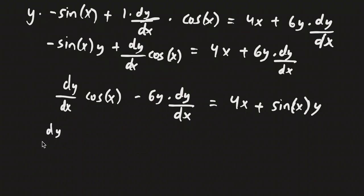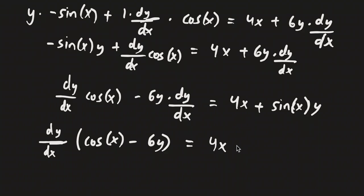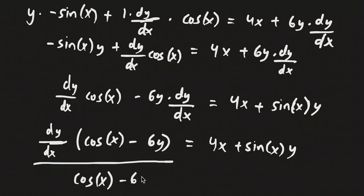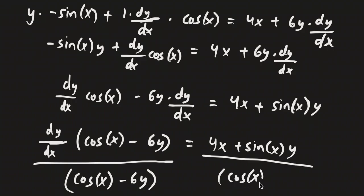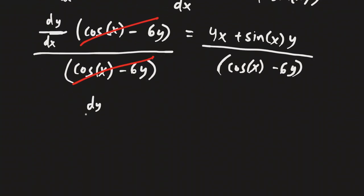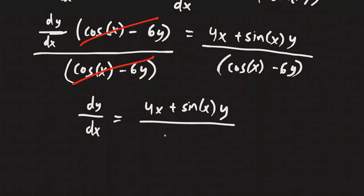Now we're going to factor out the dy/dx on the left side, making this dy/dx times cosine x minus 6y equaling 4x plus sine x times y. The final step is to divide both sides by cosine x minus 6y. These two cancel out on the left side.